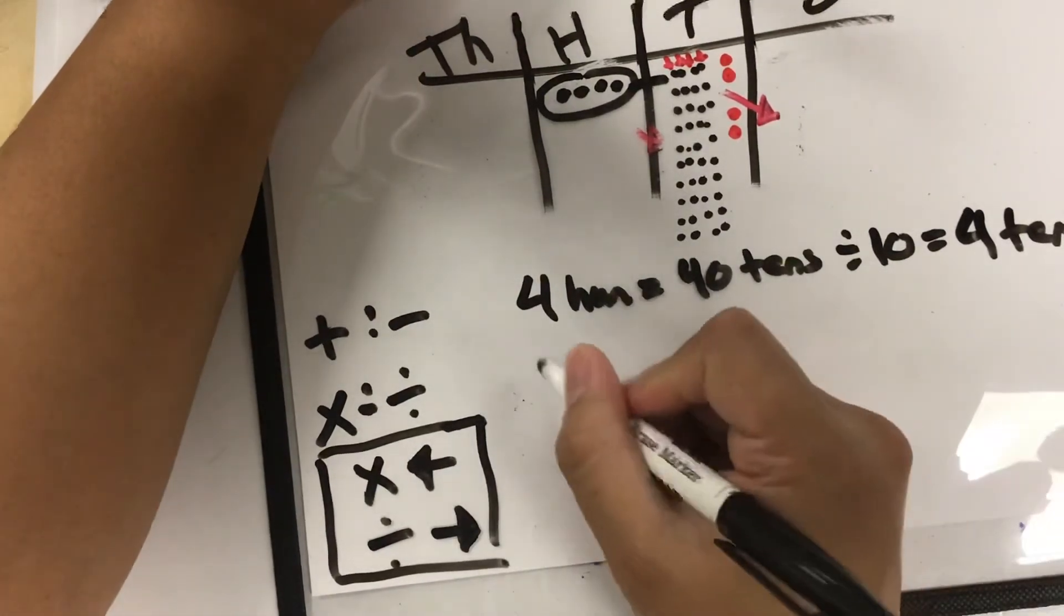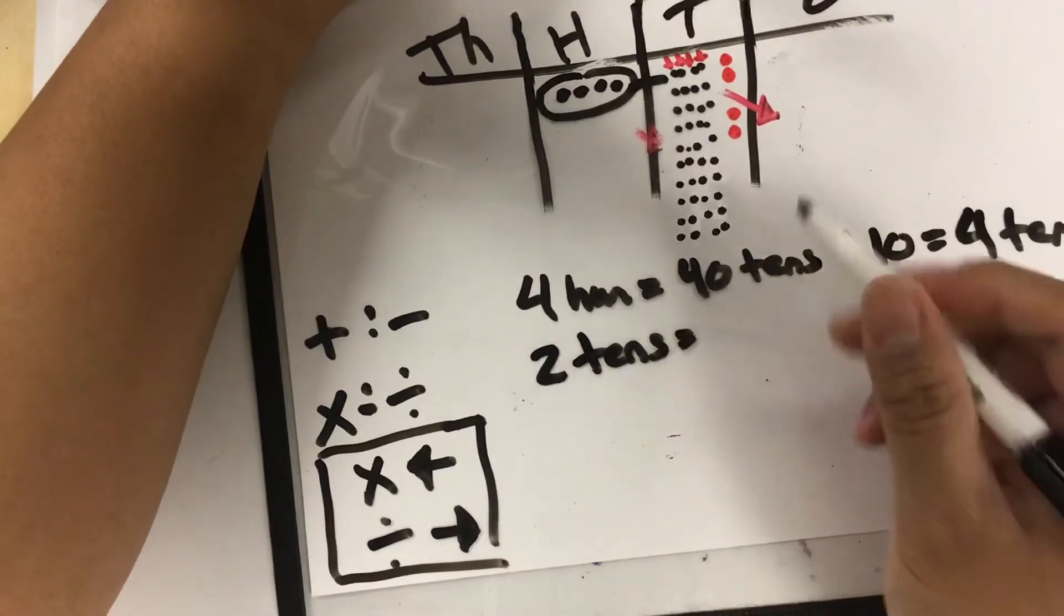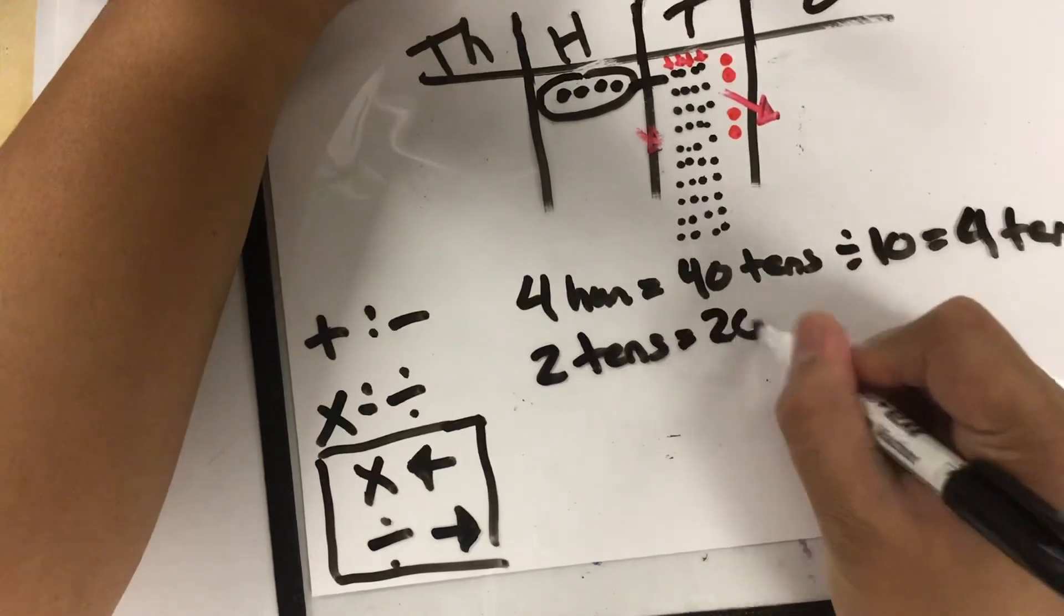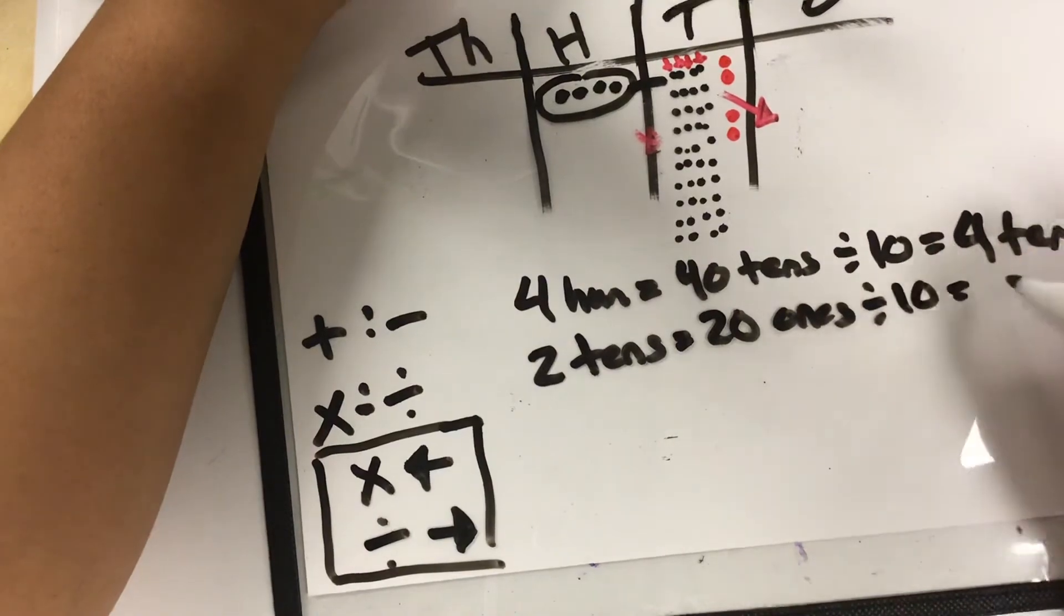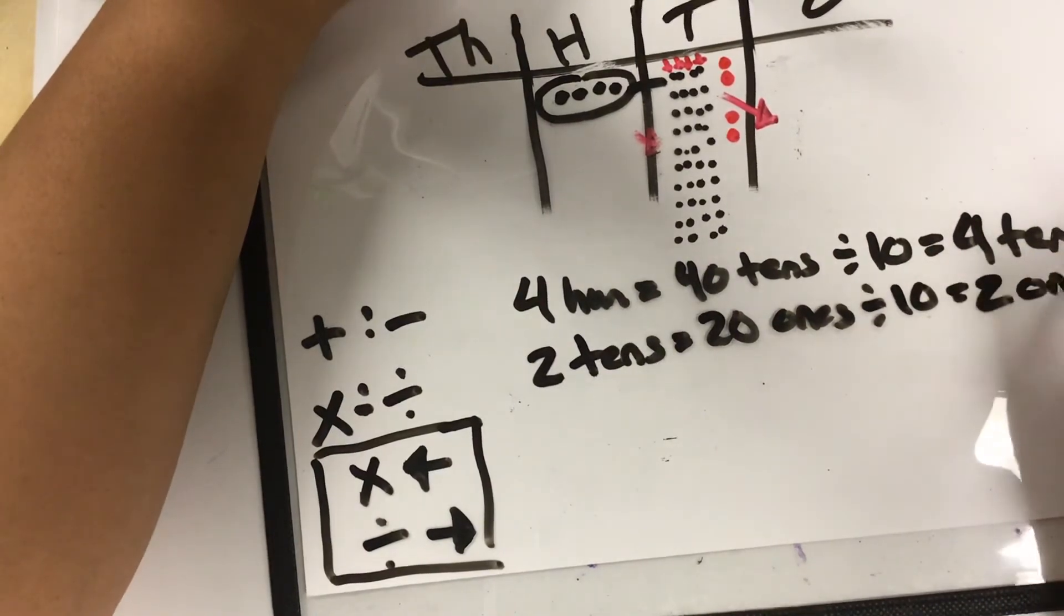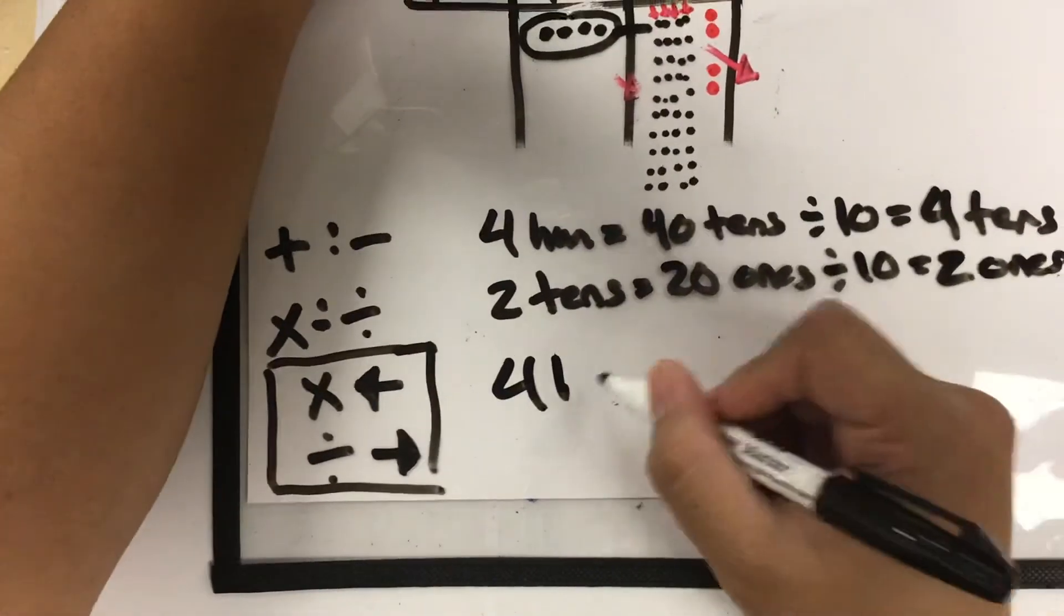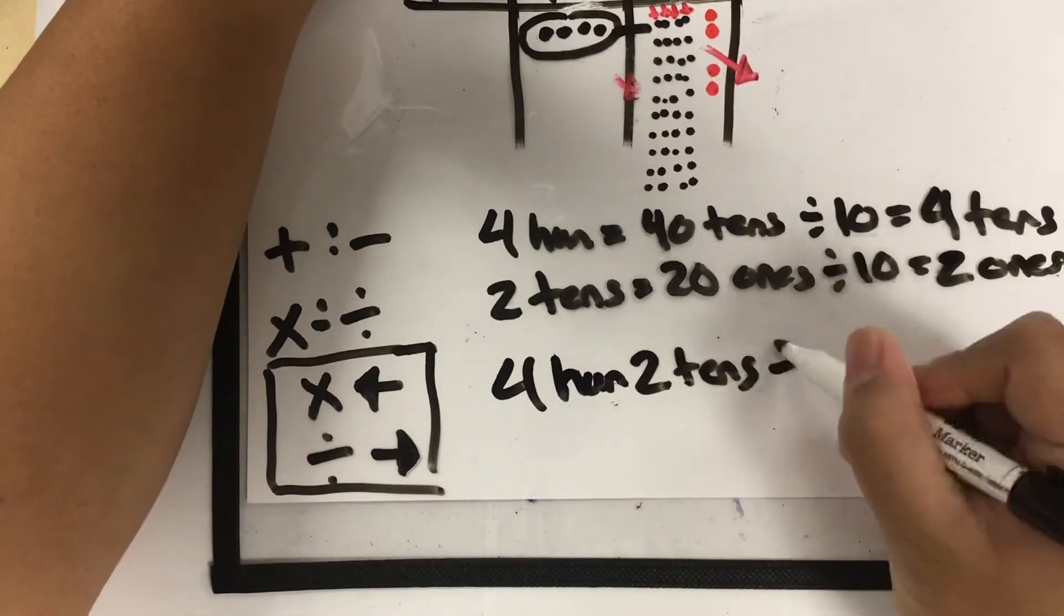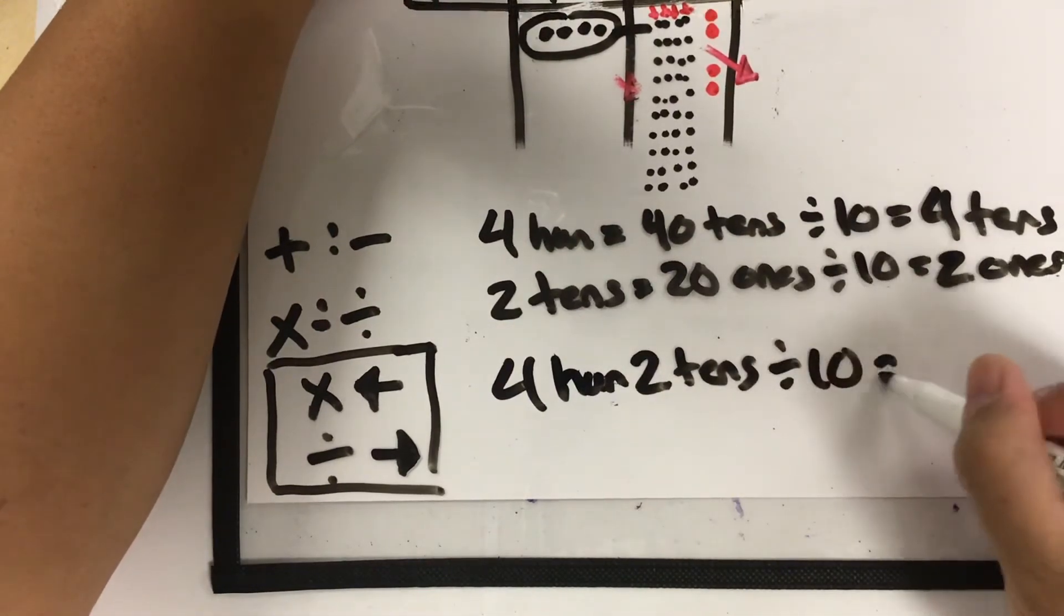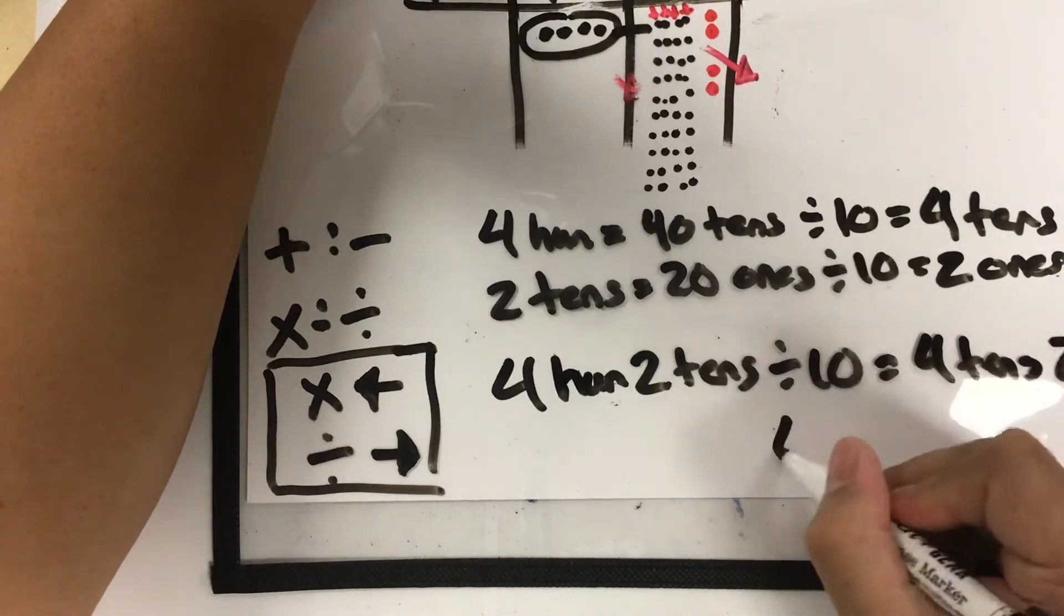Now, our two tens, that equaled 20 ones. And when we divide that by 10, we end up with two ones. So four hundreds and two tens divided by 10 equals four tens, two ones, which equals 42.